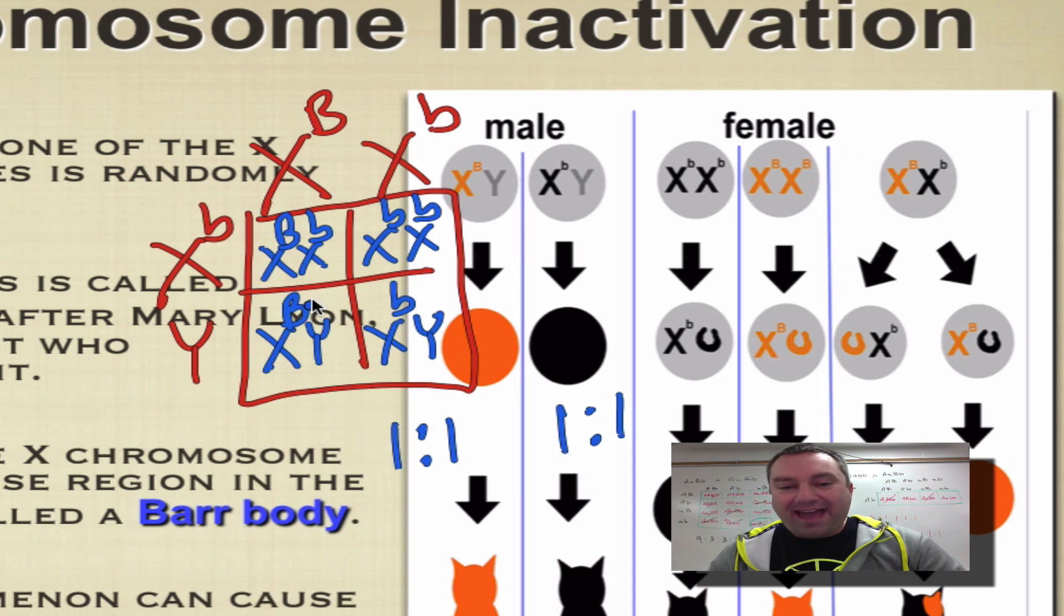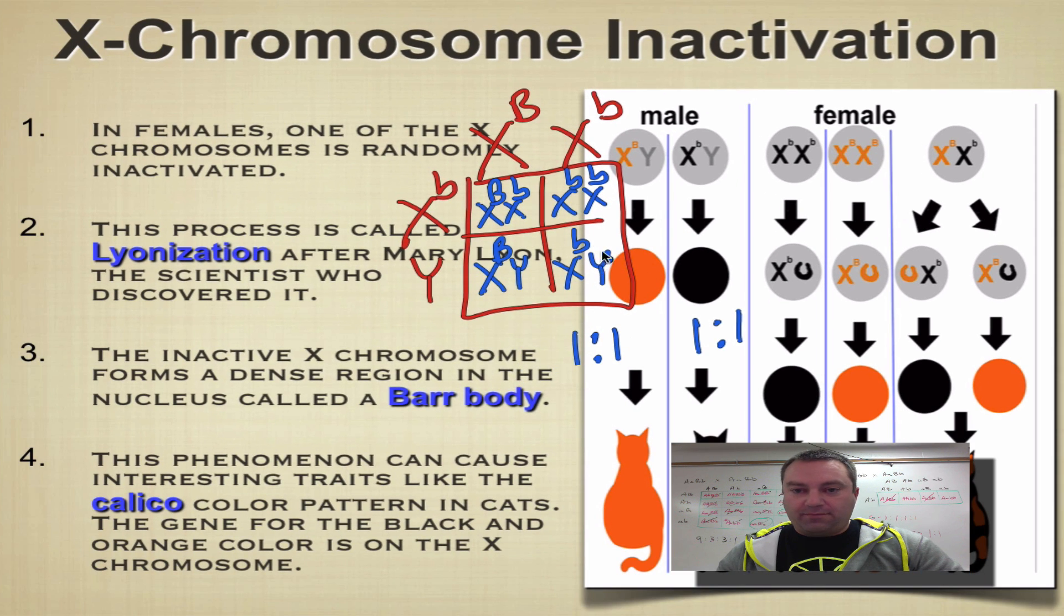Because half the males are going to be black, and the other half are going to be - let me rephrase this - half the males are going to be orange, and the other half are going to be black. If we could do it combining both sexes, we would get two black cats to one orange.